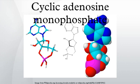History. Earl Sutherland of Case Western Reserve University won a Nobel Prize in Physiology or Medicine in 1971 for his discoveries concerning the mechanisms of the action of hormones, especially epinephrine, via second messengers.